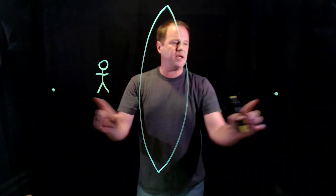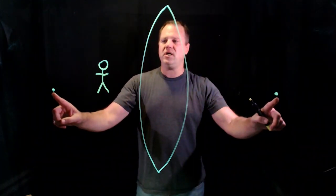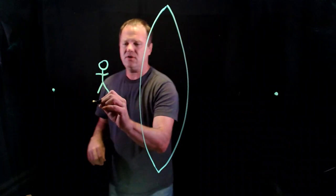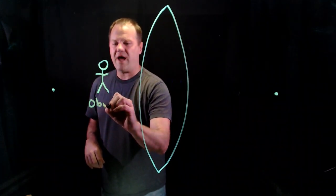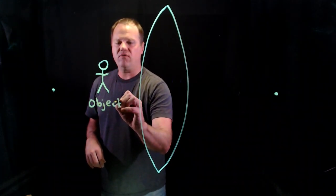So I've got this biconvex lens that has a focal point on each side, and I'm happening to place the object or the source of the light inside the focal point.